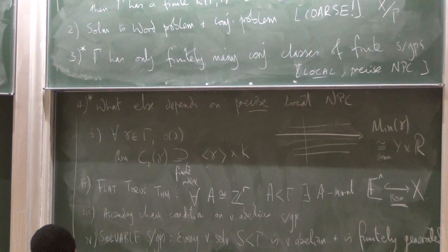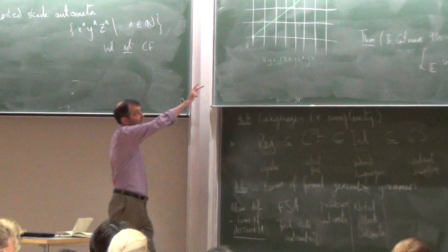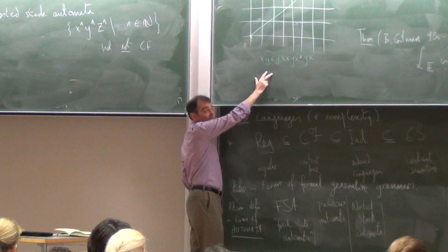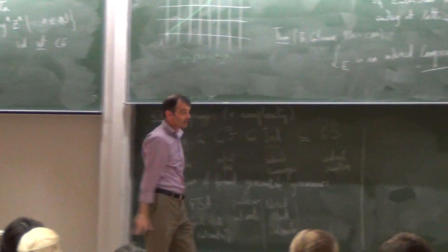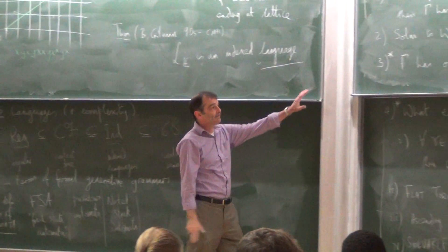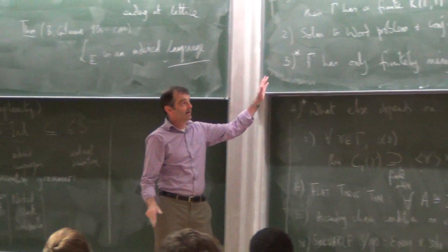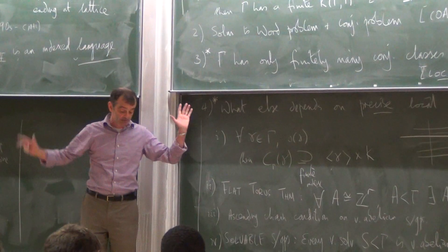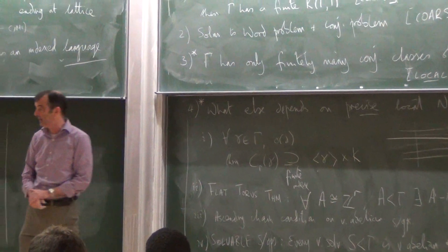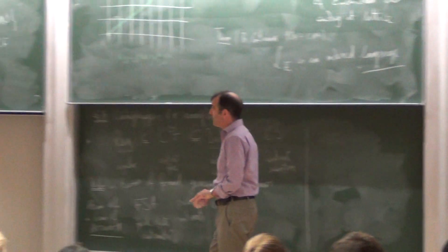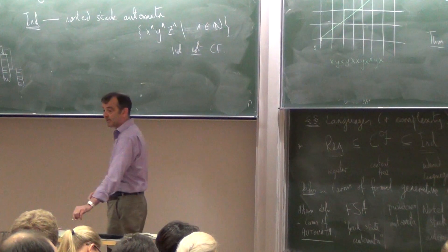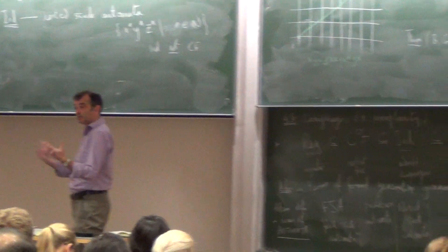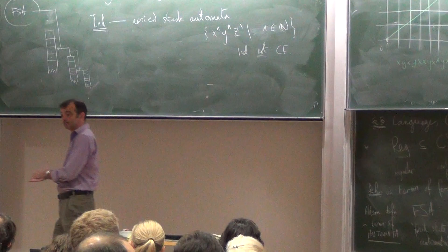We've got languages now — we know about languages. Languages in non-positive curvature are more complicated than hyperbolic geometry. We've got the key facts we know about hyperbolic groups from yesterday and CAT(0) groups from today, and we're trying to find larger classes of groups so that some of these phenomena persist, using what we know about non-positive curvature.